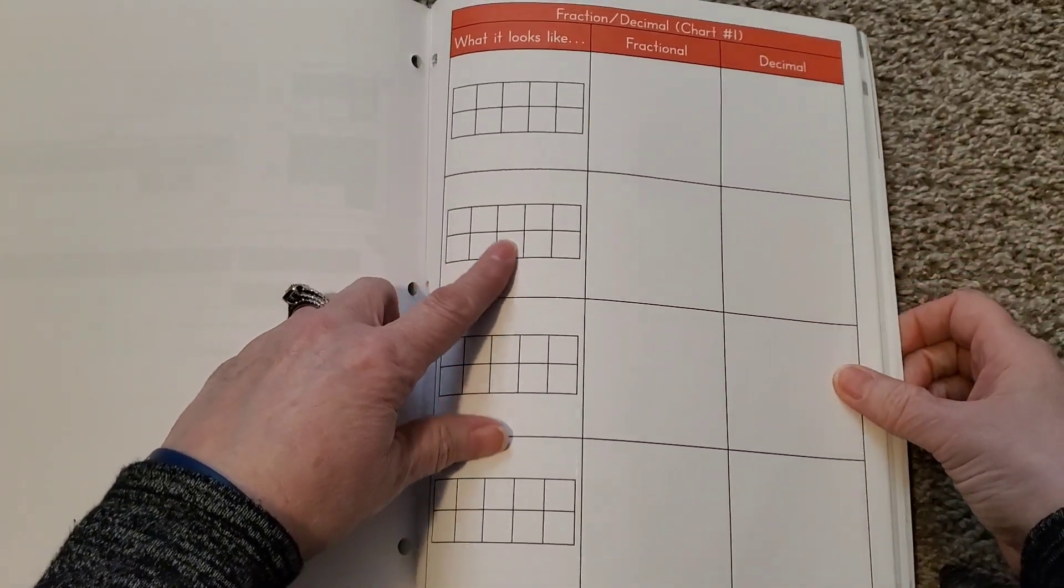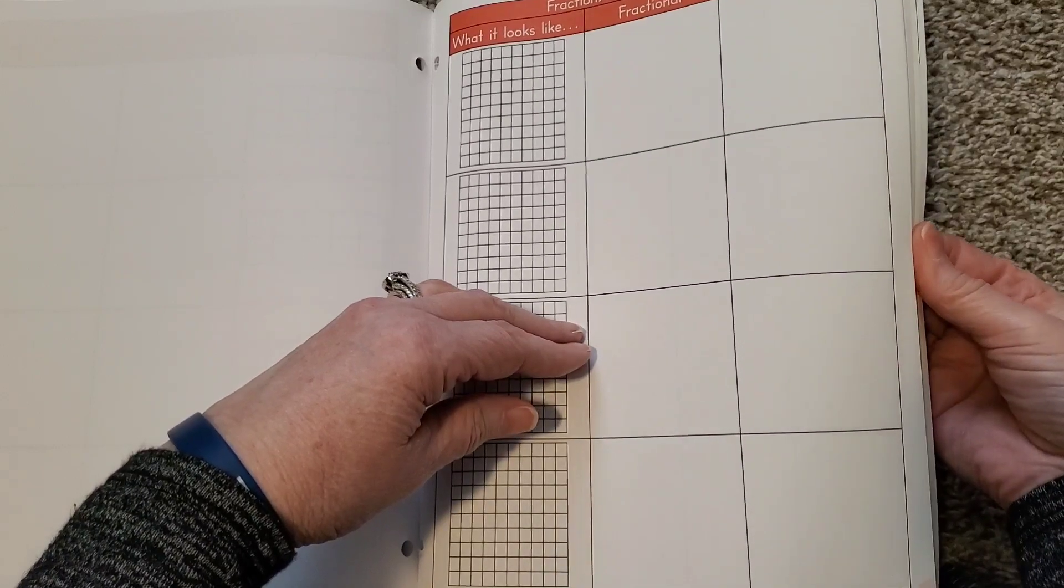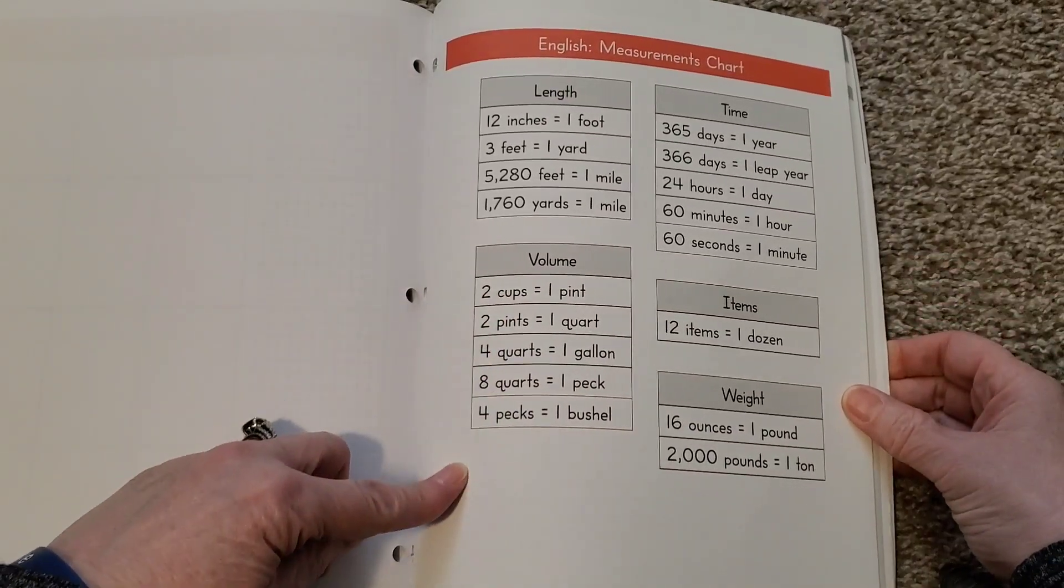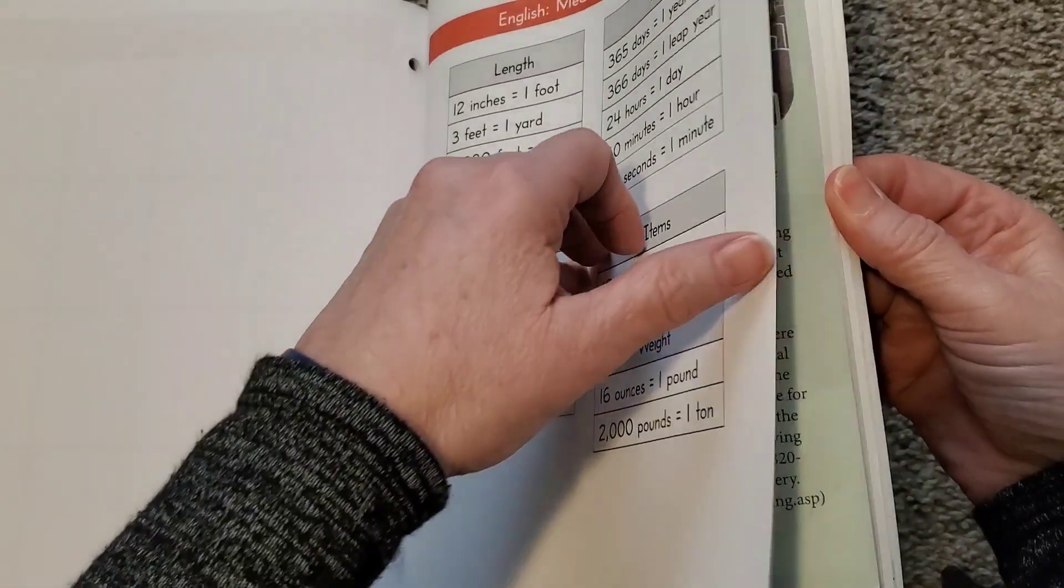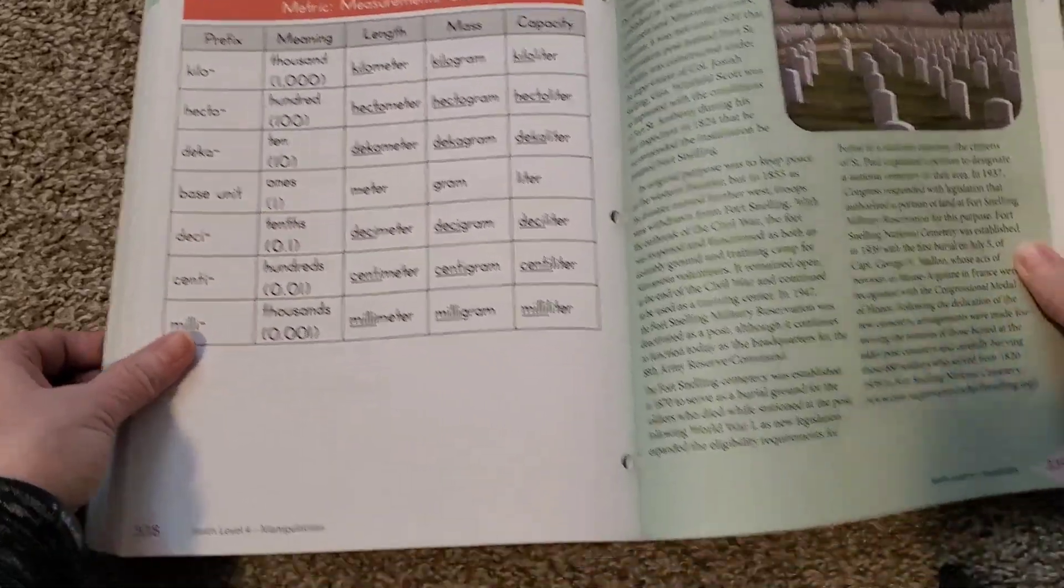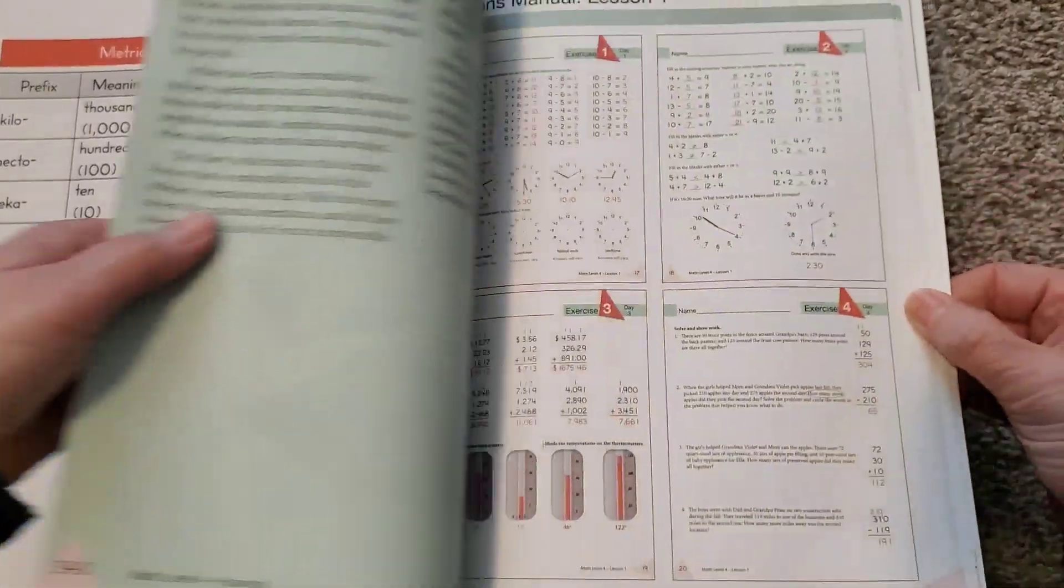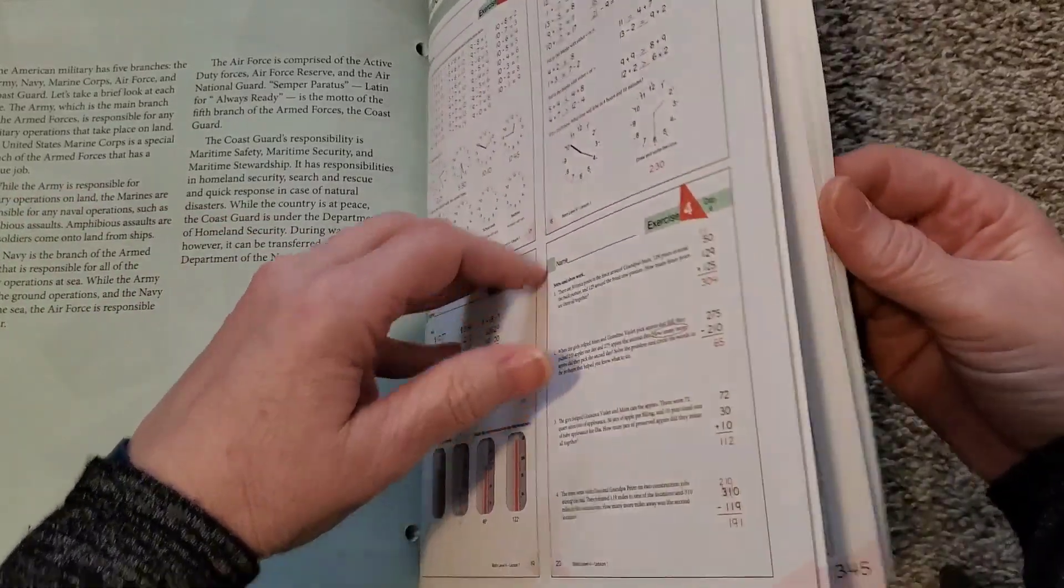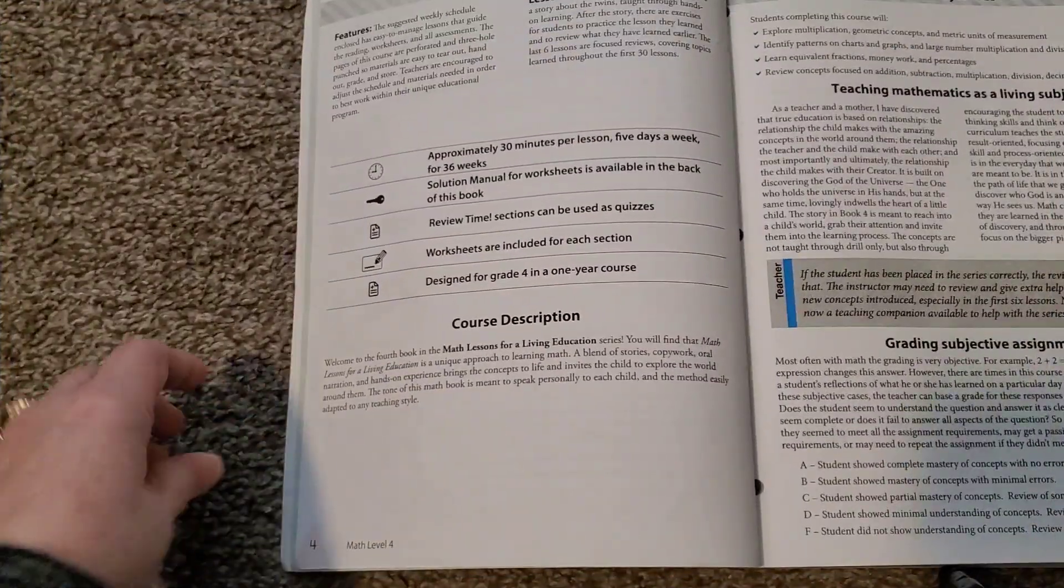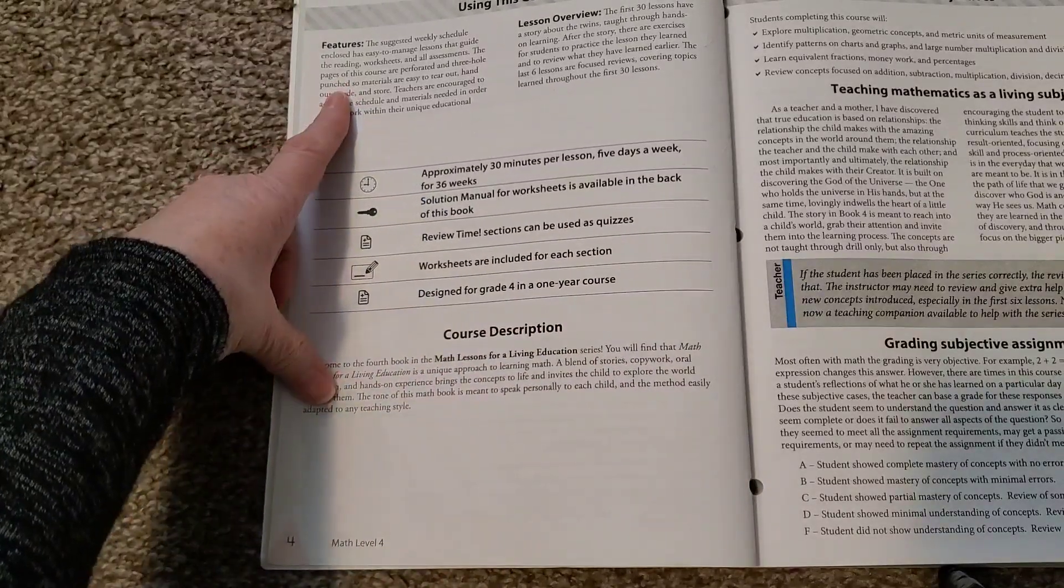And, there's also a fraction decimal chart. And, the English measurement chart. And, a metric measuring chart over here. And, then, there's the appendix. And, the solutions manual, which I've taken the majority of this out. I left some of the beginning in, but all the rest of the back end is all gone. But, yeah. So, you have all the solutions back here in the back of the book. And, I don't know. I think I might have skipped this page at the beginning when I was flipping through. But, how to use this course and the features.